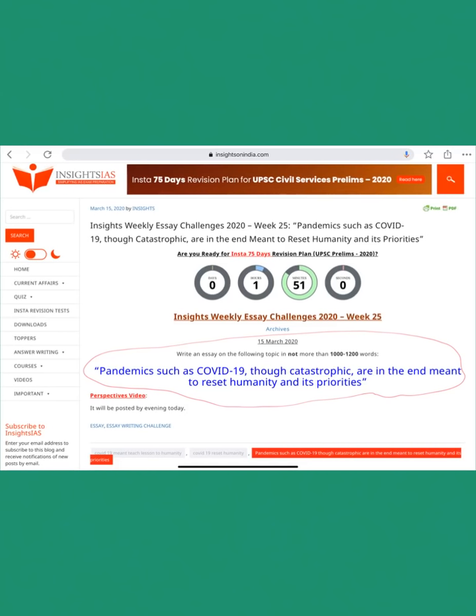Hello, good evening everyone. Welcome to Insights Essay Initiative Perspectives. Today's topic is pandemics such as COVID-19, Coronavirus Disease-19, though catastrophic are in the end meant to reset humanity and its priorities. It is something I myself coined the statement. Myself, Vinay Kumar, Founder and Director of Insights IAS. Hopefully you are aware of our 75 days revision plan which is going to start in one hour fifty minutes. So do follow the plan.